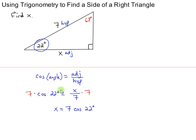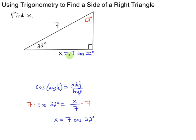So let's go back up here in our picture and label that. So x is 7 times the cosine of 22 degrees. We'll actually round that in a minute to figure out an approximate length.